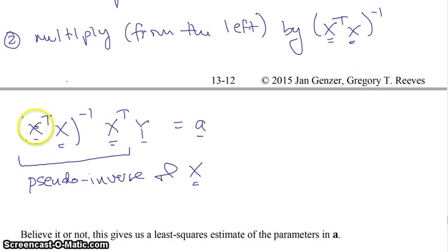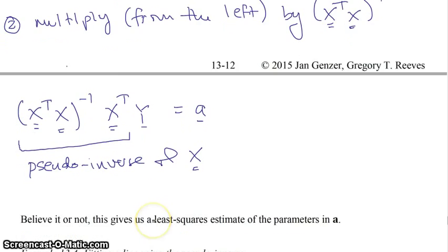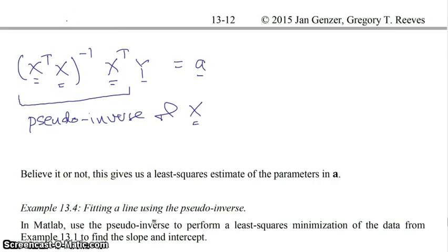And so it's a way of calculating what is not really the inverse of x, but it kind of looks like it from a mathematical standpoint. This together, multiplied onto y from the left, removes x from this side, and now you just get A here. It's a little bit cheating because it's not a square system. And so what you're doing, believe it or not, is that this manipulation here gives us actually a least squares estimate of the parameters in A.